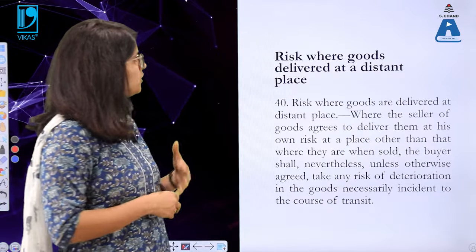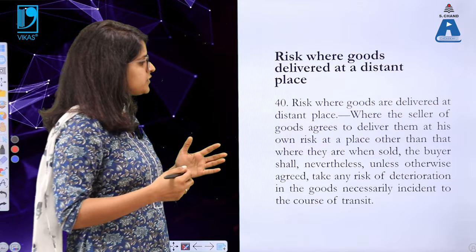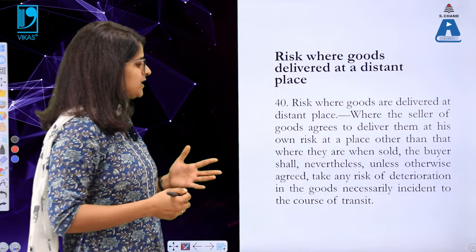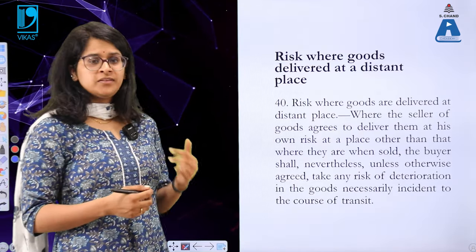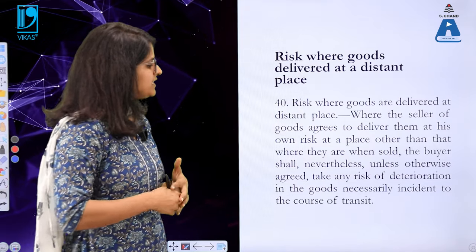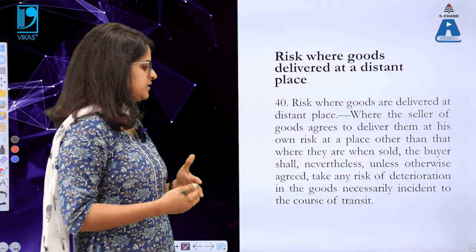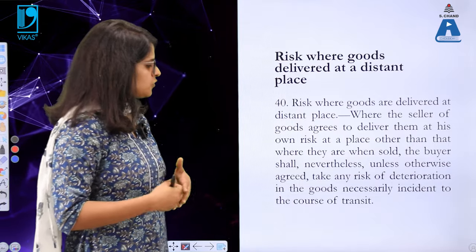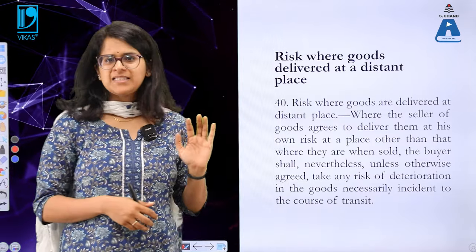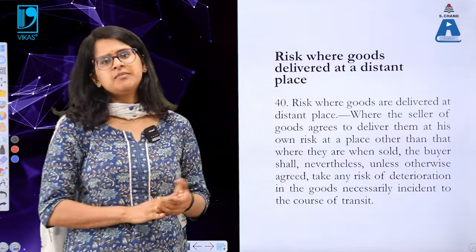Regarding risk where goods are delivered at a distant place: where the seller of goods agrees to deliver them at his own risk at a place other than where they are when sold, the buyer shall nevertheless — unless otherwise agreed — take any risk of deterioration in the goods necessarily incident to the course of transit.